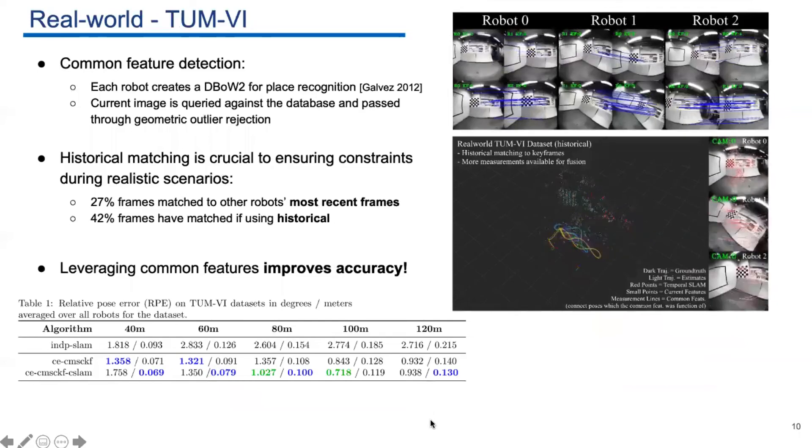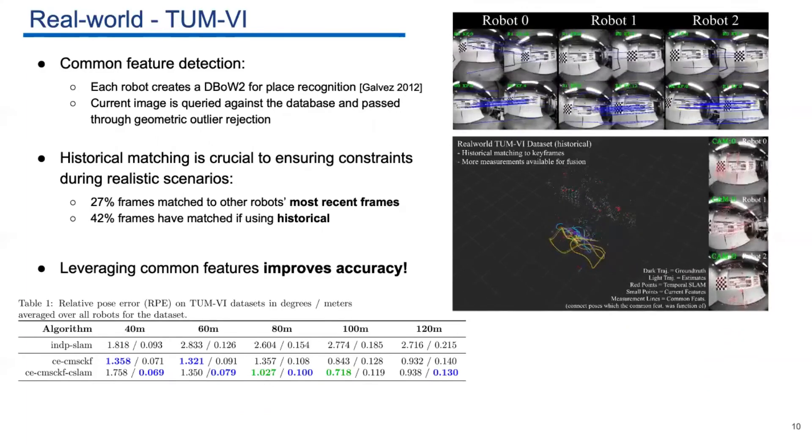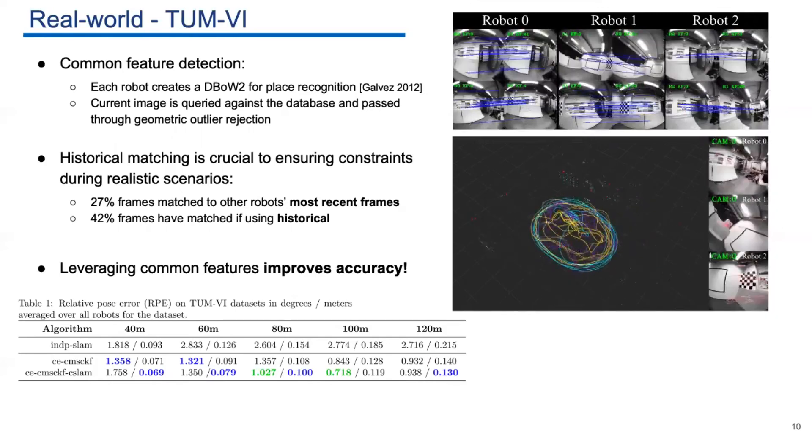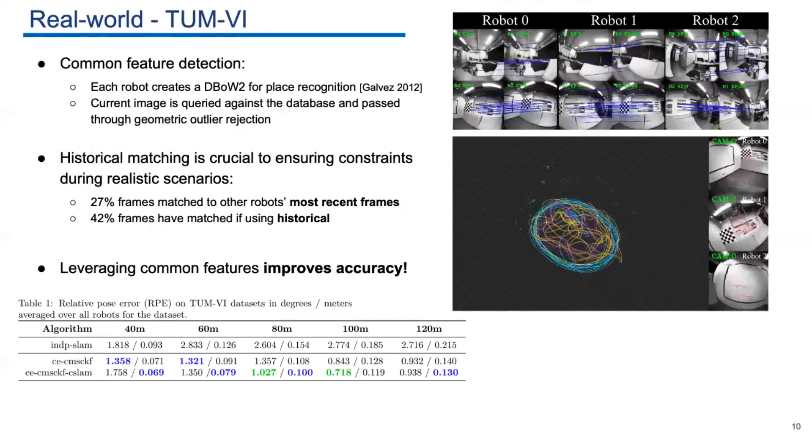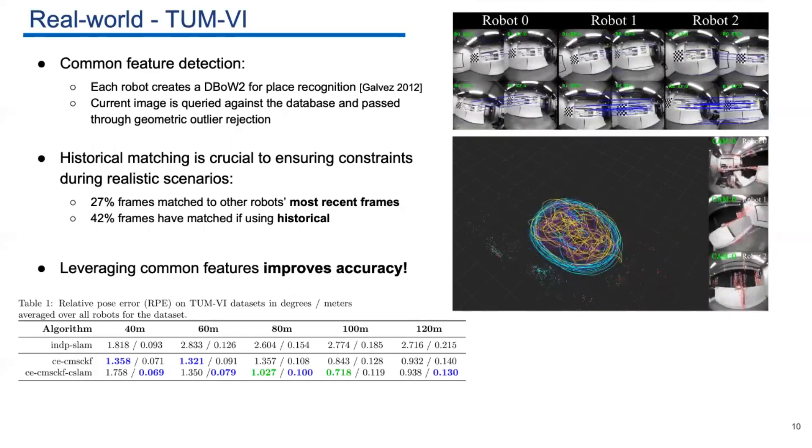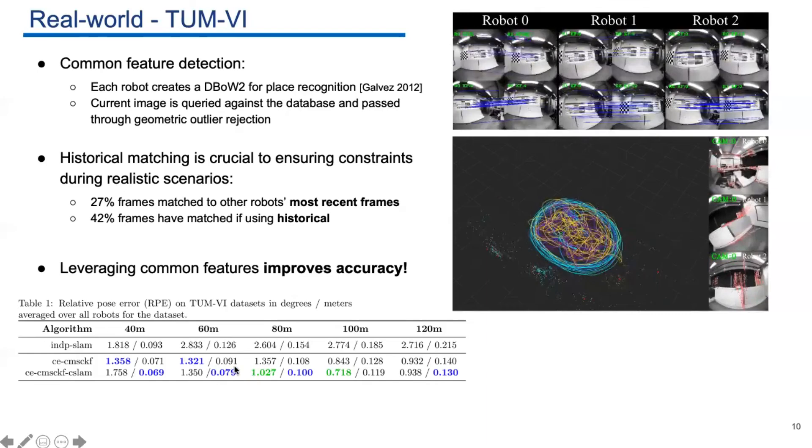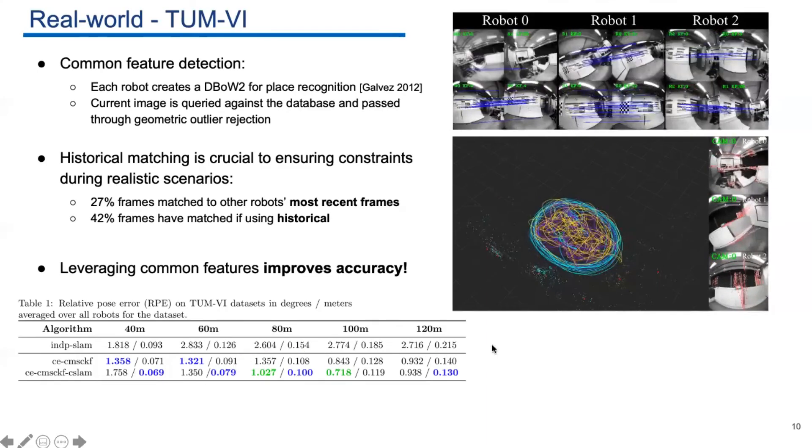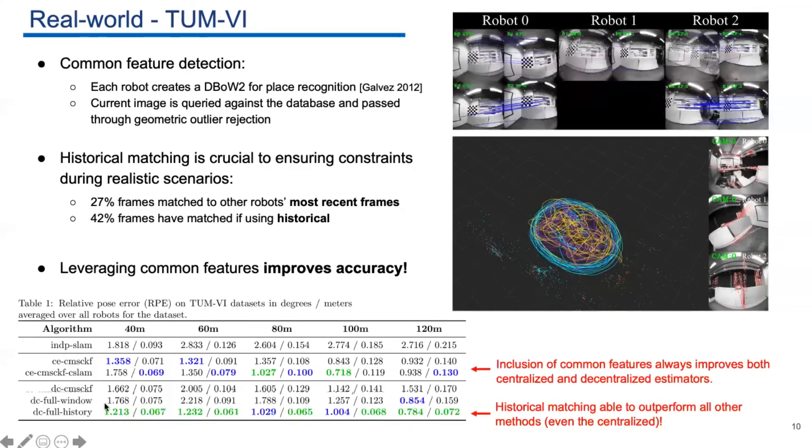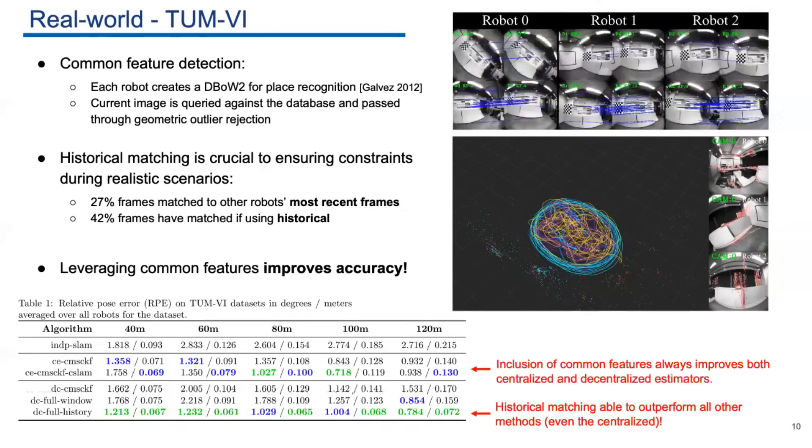We further evaluate our algorithms on some datasets. Each robot has a database that is used for place recognition, and each current image is queried against this database to find the common features between robots. For this dataset, if we consider the historical matching, the percentage where we can find the common features is increased from 27 percent to 42 percent. In this table, we show the RPE results for different algorithms. The centralized algorithms do improve the accuracy a lot for different segment lengths. For the three distributed algorithms, it also improves the accuracy, and we can see the historical case is the best one.